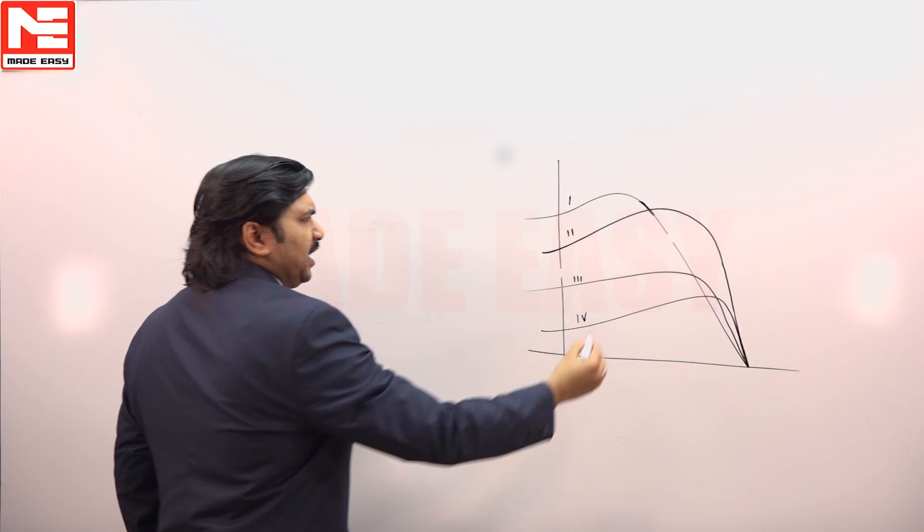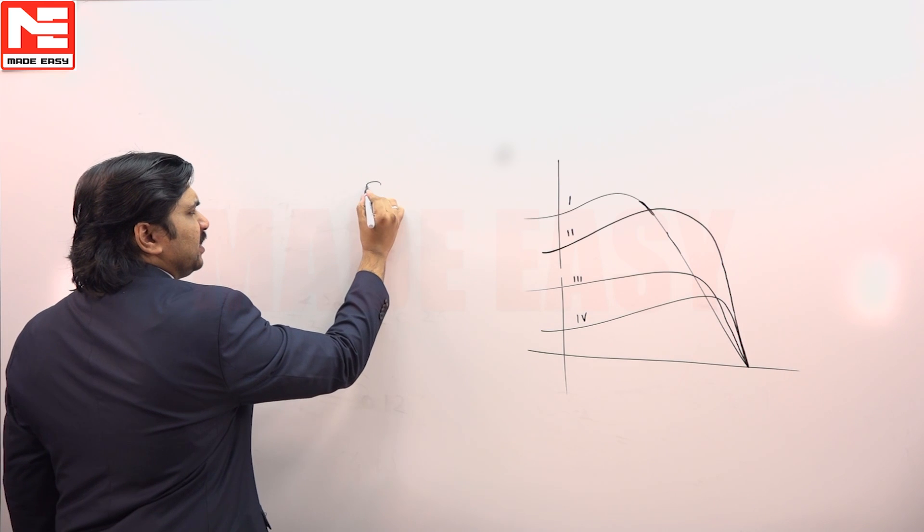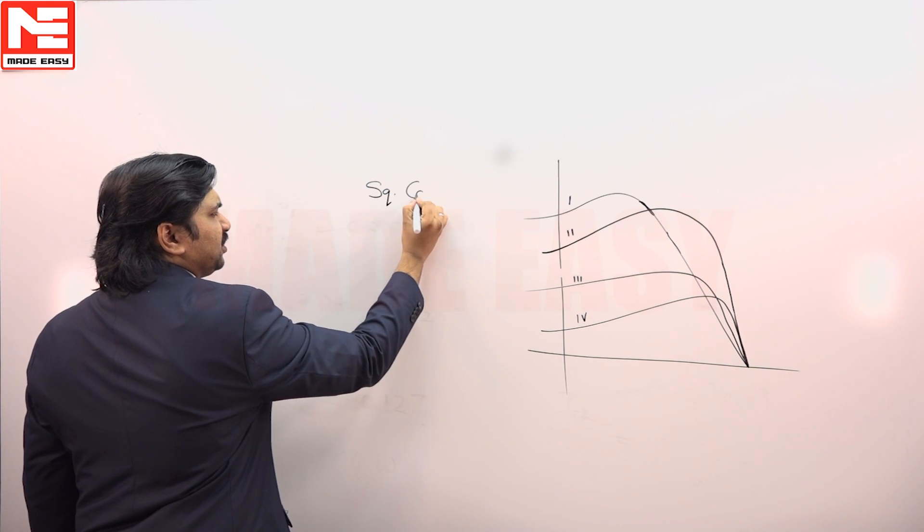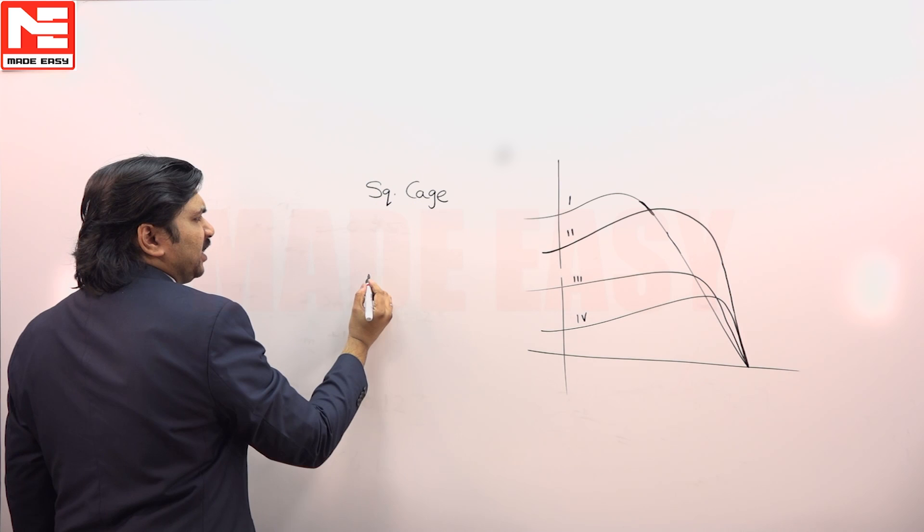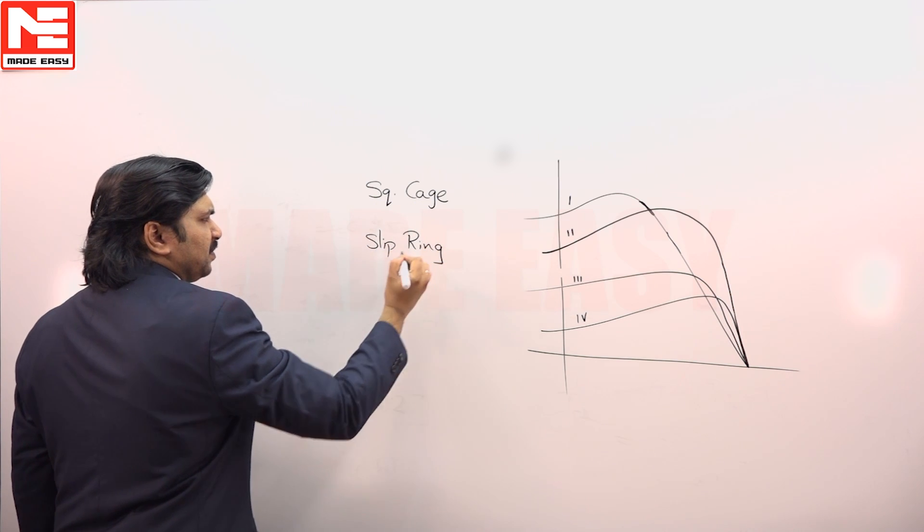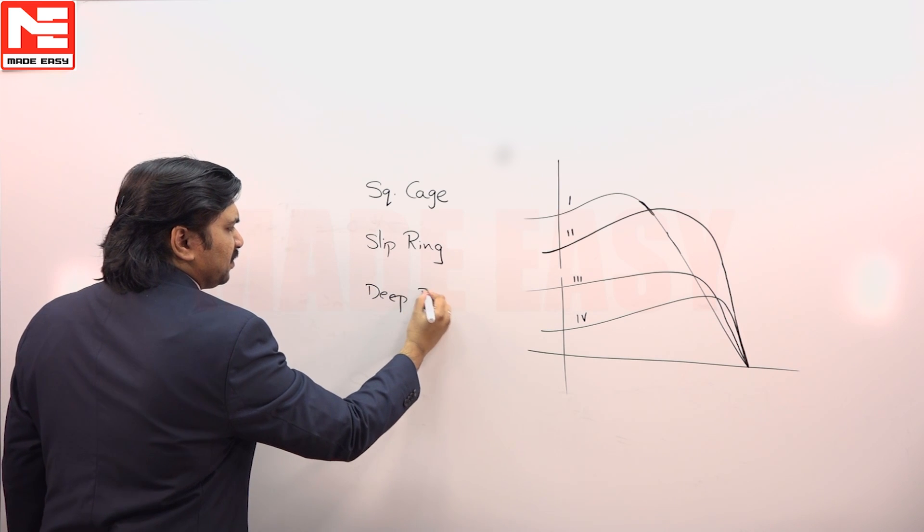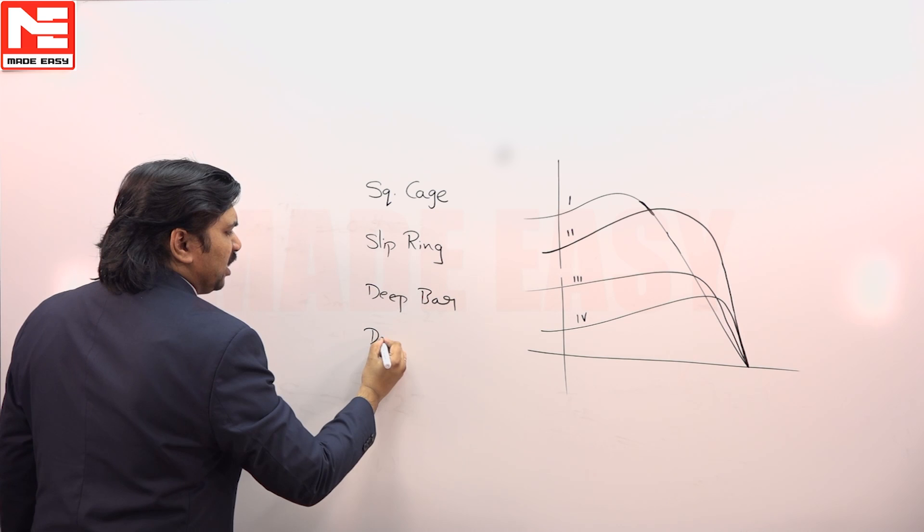It was given in all these four, there are four types of motors. One is basic squirrel cage, other one is slip ring, other one is deep bar, other one is double cage.